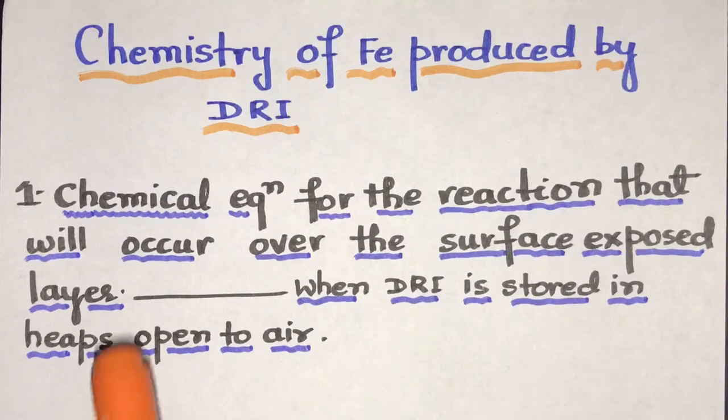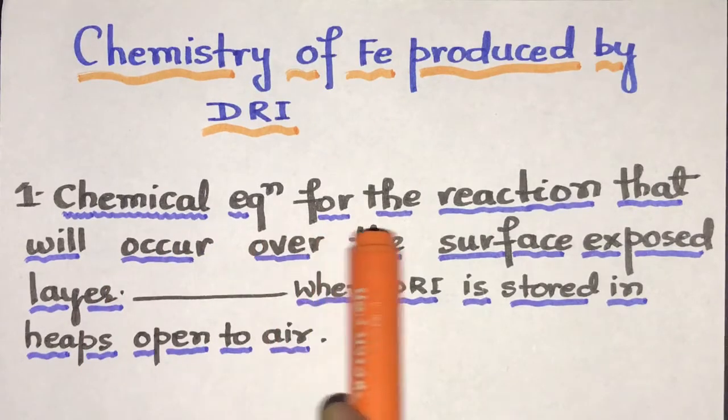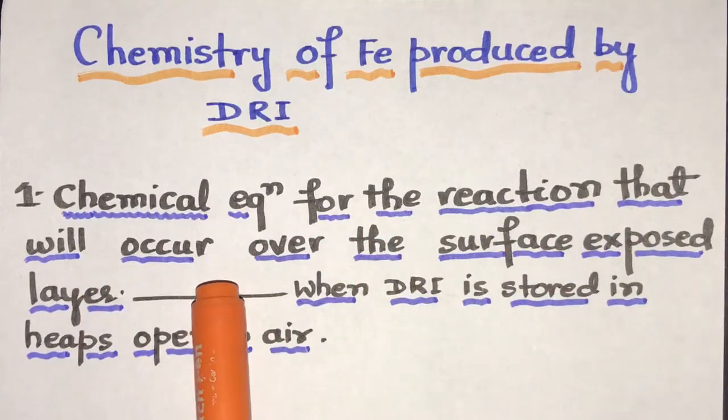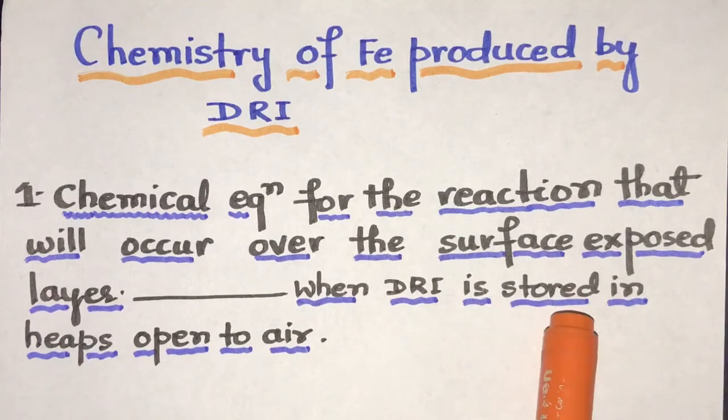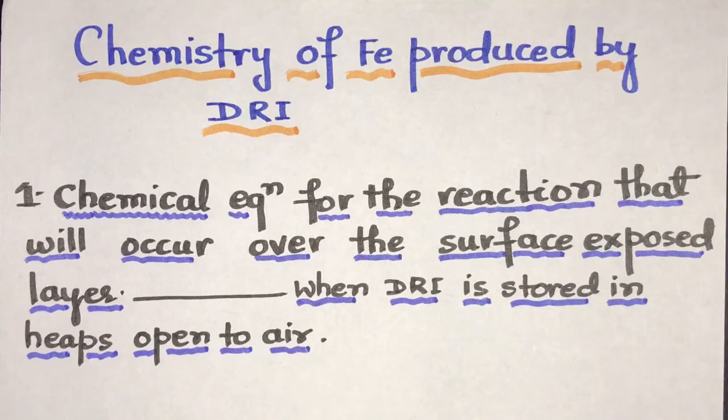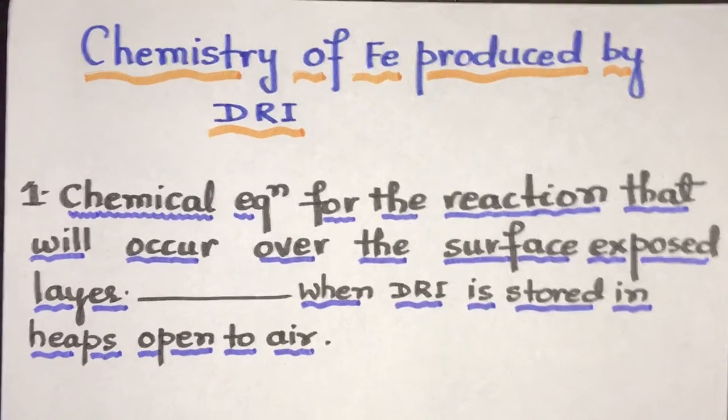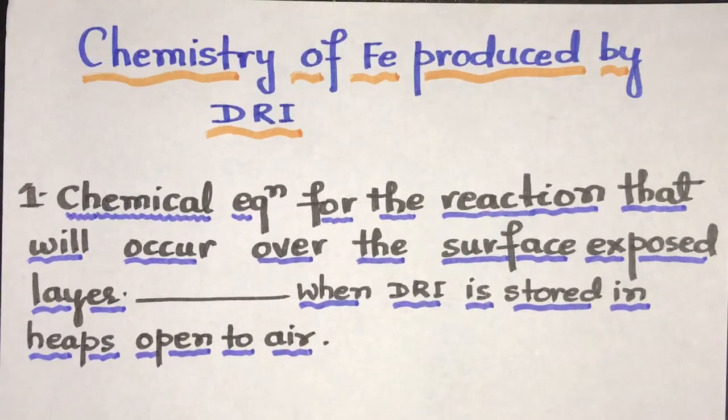So the first problem is chemical equation for the reaction that will occur over the surface exposed layer when DRI is stored in heaps open to air. So when DRI is stored in heaps open to air, what will be the reaction that will occur on the surface of iron?